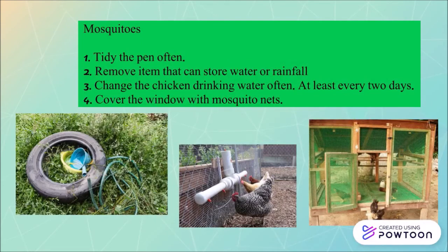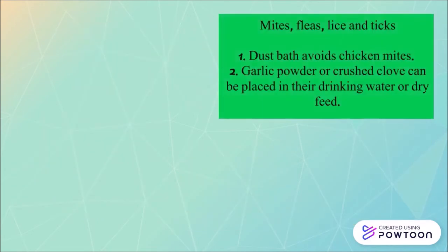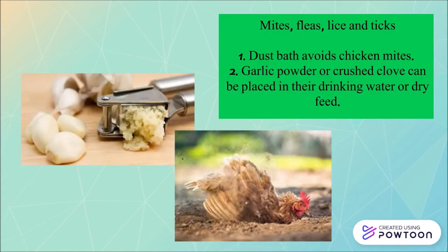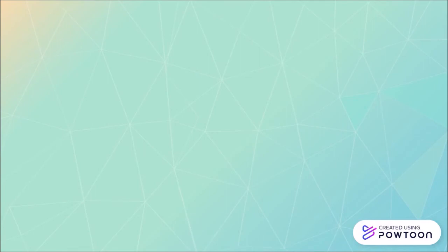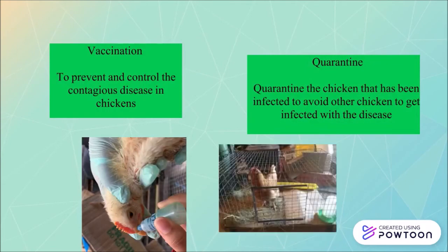All these measures avoid the presence of mosquitoes. For the vector mites, fleas, lice, and ticks, dust baths for the birds are very important. Garlic powder or crushed cloves can be placed in their drinking water or their feed. This is one of the remedies to avoid the presence of these insects. Other than vector control, vaccination is one of the preventions too. It prevents and controls vector-borne disease in the birds. Moreover, quarantine of the chickens that have been infected is also one of the prevention ways, as this avoids the disease from spreading to another bird.